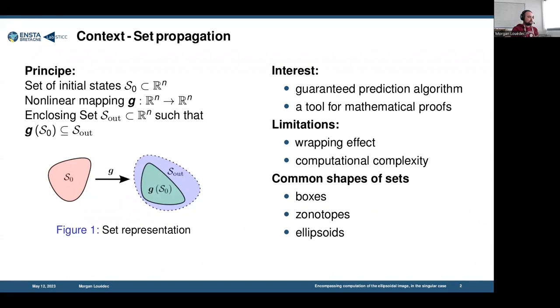The interest of using an enclosure of the reachable set is to be able to use an algorithm to find this enclosure and then use this algorithm in mathematical proofs. In practice, these algorithms have a limitation in terms of pessimism because there are some type of wrapping effect where the estimated set will be too pessimistic.